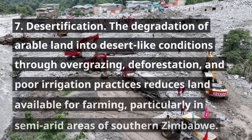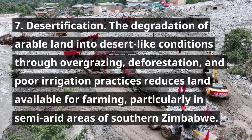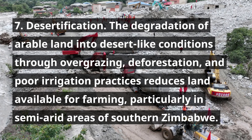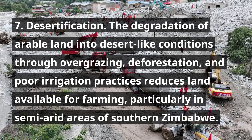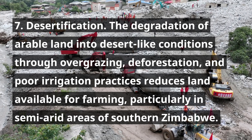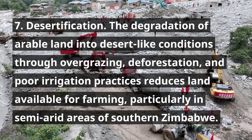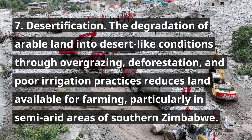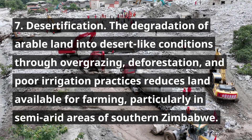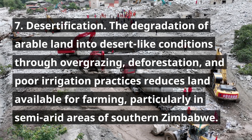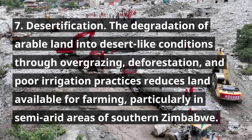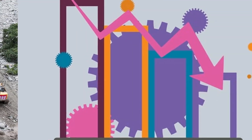7. Desertification. The degradation of arable land into desert-like conditions through overgrazing, deforestation, and poor irrigation practices reduces land available for farming, particularly in semi-arid areas of southern Zimbabwe.